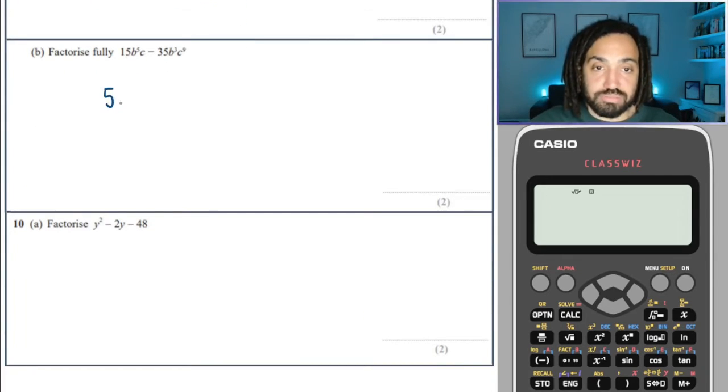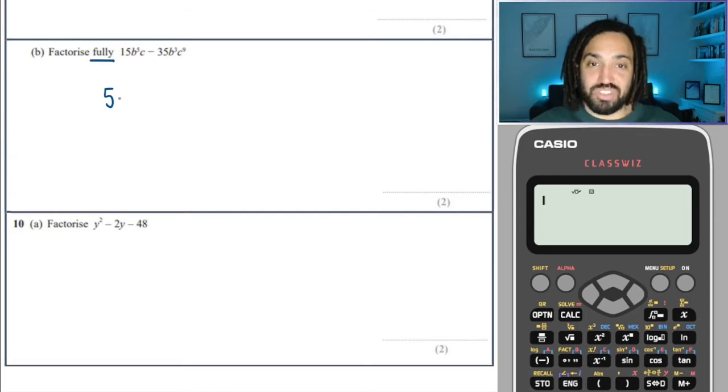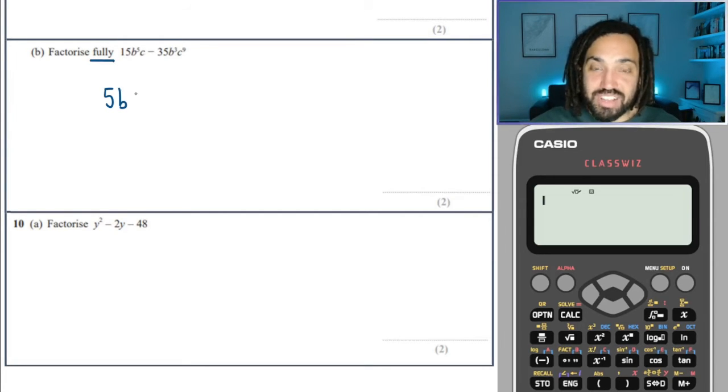Five. Oh, slow down there. Slow down. Factorize fully. Let's take out all the terms. We need a five, a B cubed, and a C is the highest C.